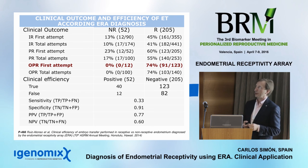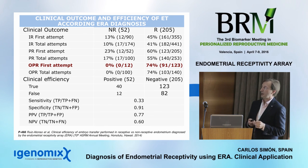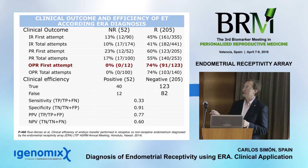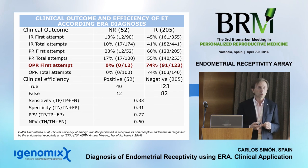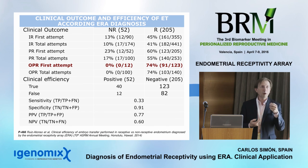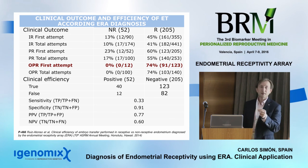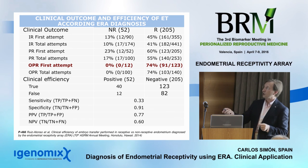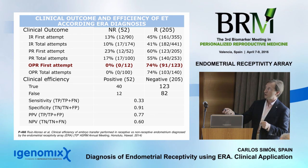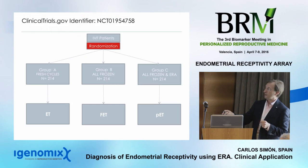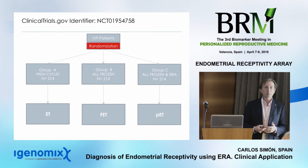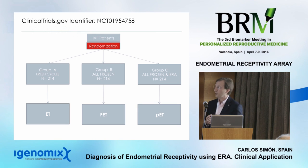Data being prepared for publication — presented at ISRM — includes 52 cases where the ERA result was non-receptive but transfer was performed anyway, compared to 200 patients who were receptive and transferred as recommended. Non-receptive patients transferred at the wrong moment had near-zero implantation, zero ongoing pregnancy. Receptive patients transferred at the ERA-predicted moment had 45% implantation rate, 60% pregnancy rate, and 74% ongoing — more and more evidence for the test.